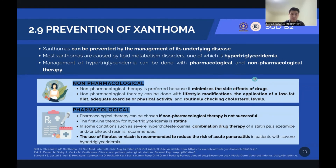On the other hand, we can do pharmacological therapy if non-pharmacological therapy is not enough or not successful. The first-line therapy for hypertriglyceridemia is statins. In some conditions such as severe hypercholesterolemia, we can use combination drug therapy of statin plus ezetimibe and/or bile acid resin. The use of fibrates or niacin is recommended to reduce the risk of acute pancreatitis in patients with severe hypertriglyceridemia.